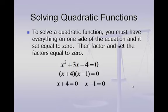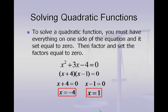On the first factor, I would subtract 4 in order to solve for x. That gives me x equals negative 4. On the second factor, I would add 1 to solve for x and that gives me x equals 1. So the two answers to this problem are x equals negative 4 and x equals 1.